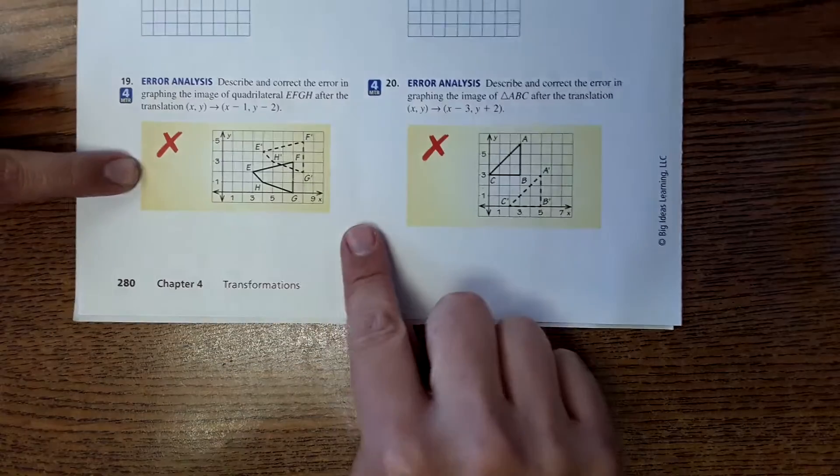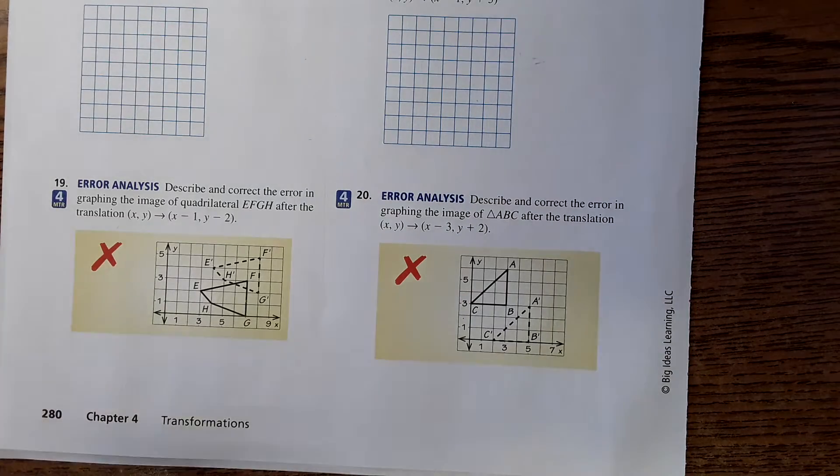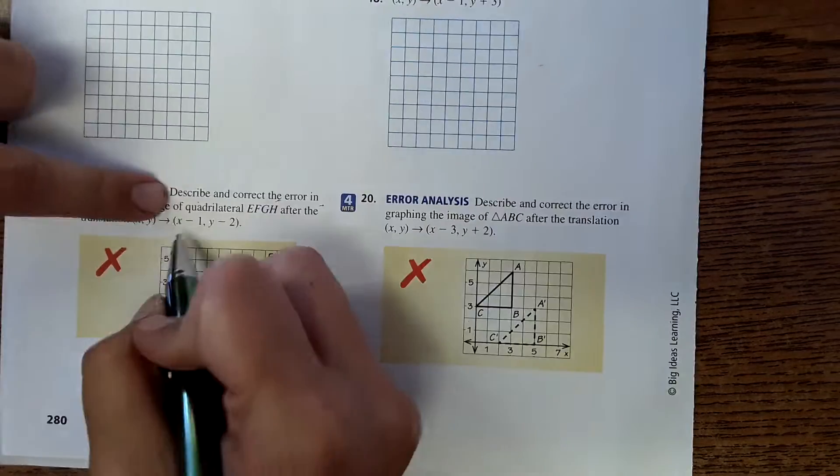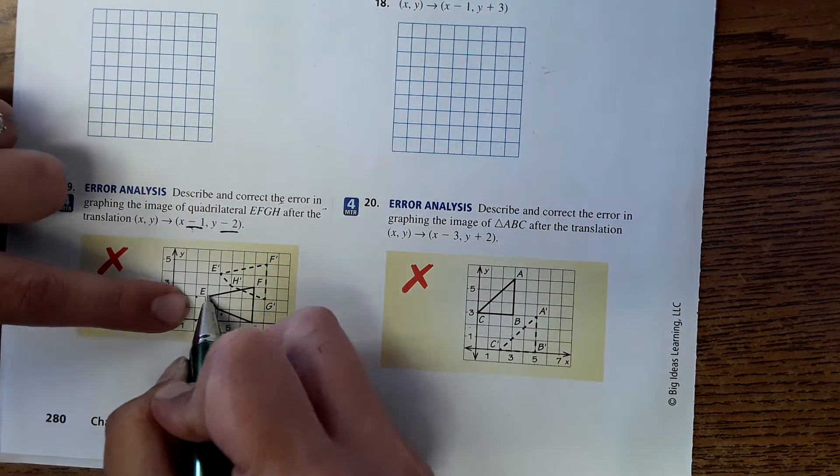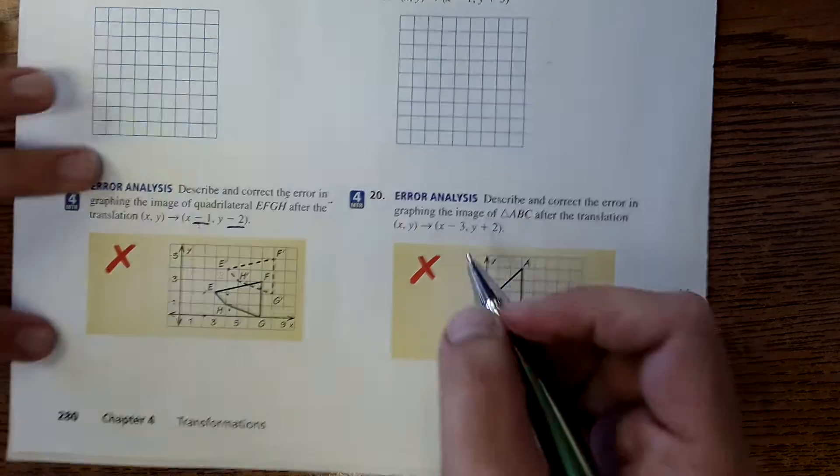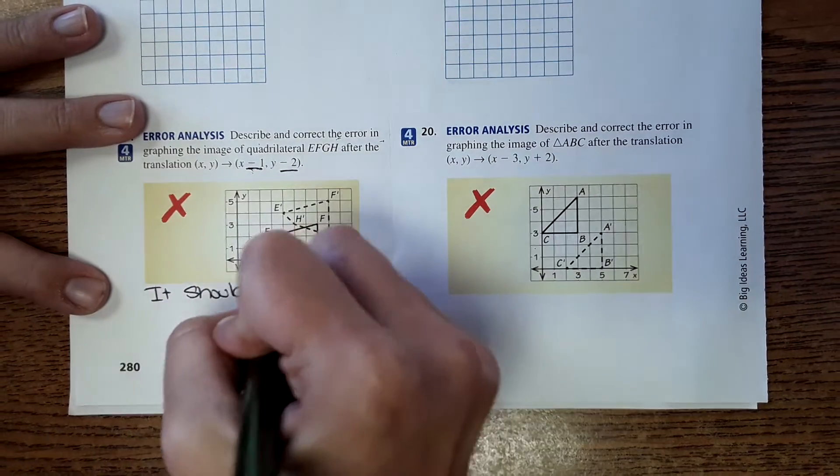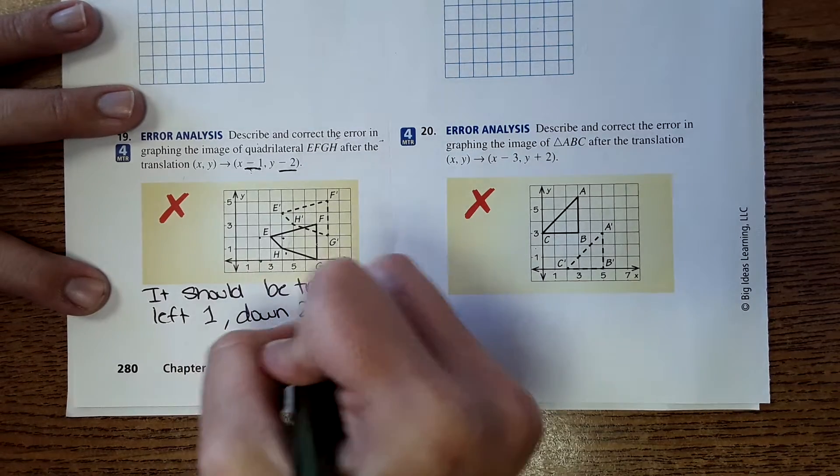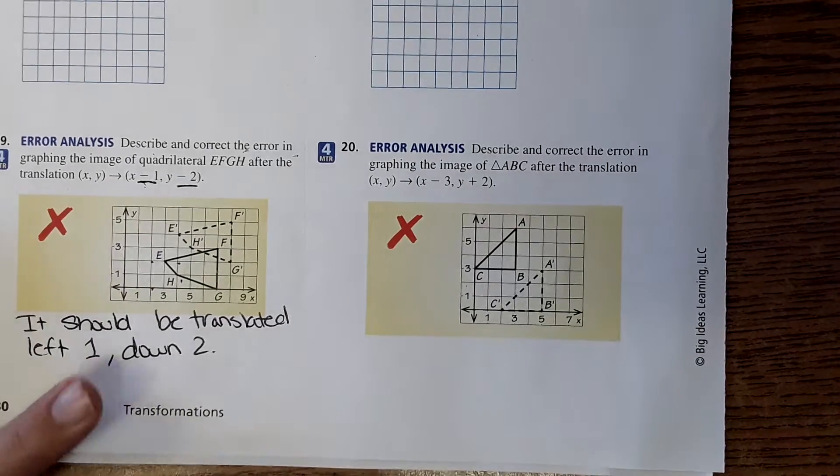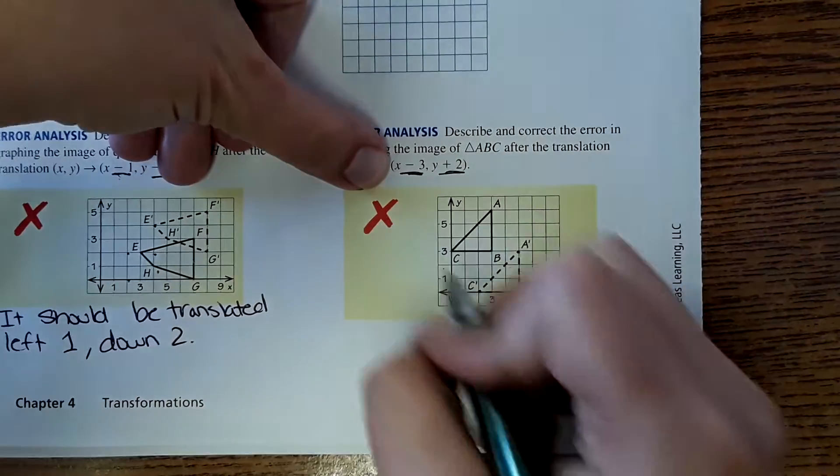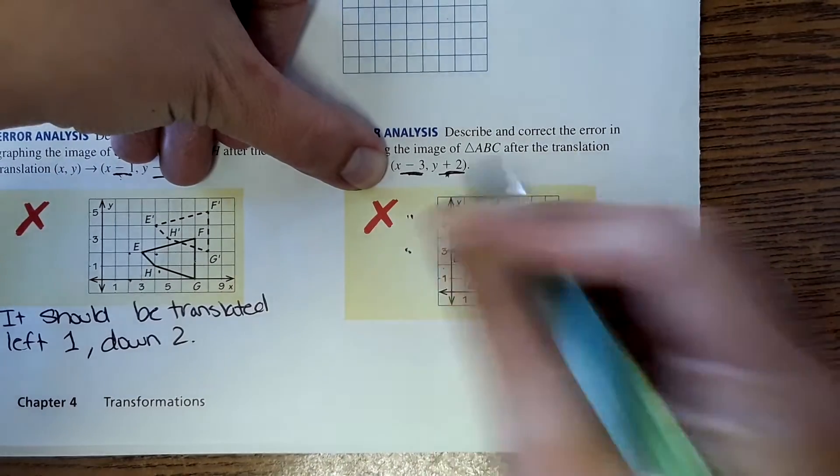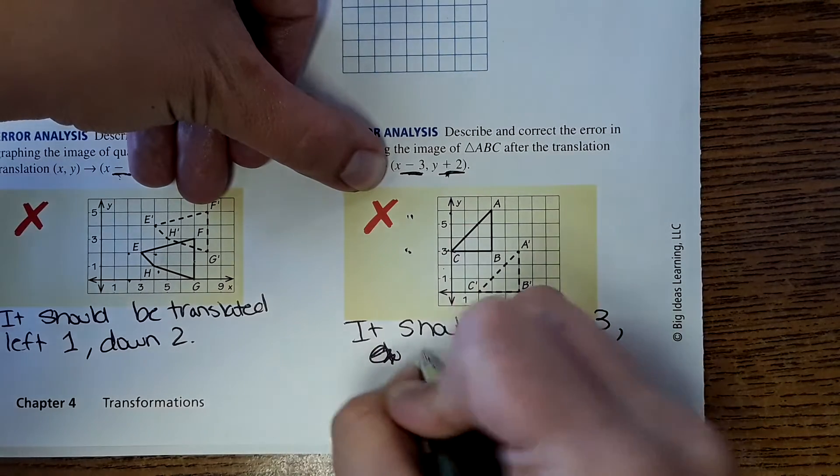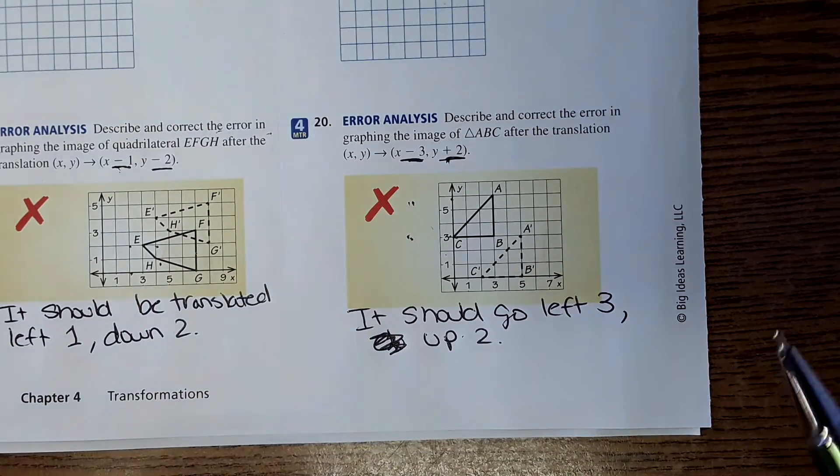Okay, so 19, 20. Down here is error analysis. It says describe and correct the error in graphing the image of quadrilateral EFGH after the translation. Okay, so the translation is minus 1, minus 2. So it should be going to left 1, down 2. And it looks like instead it's going to the right 1, up 2. So it's like backwards. So the error is it should be translated left 1, down 2. And then for the one over here, number 20, minus 3, plus 2. So it should go to the left 3, up 2. And that is not what's happening at all. So it should go left 3, up 2. And that's not happening either. Okay, so that's all for practice 4-1.